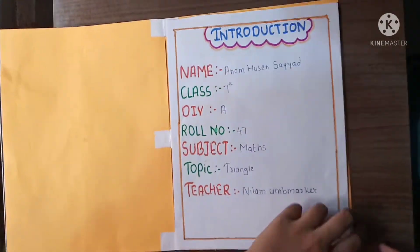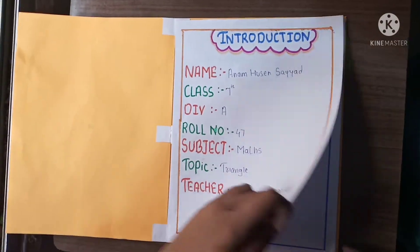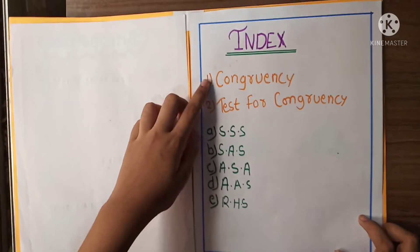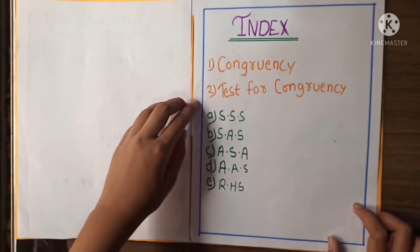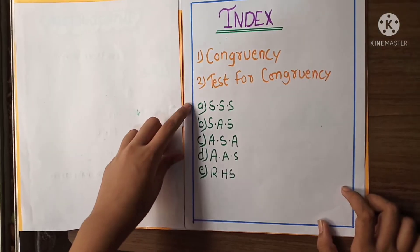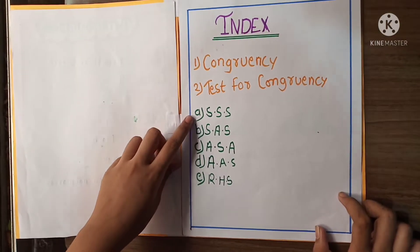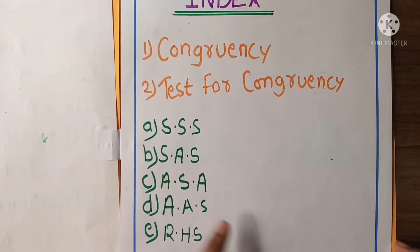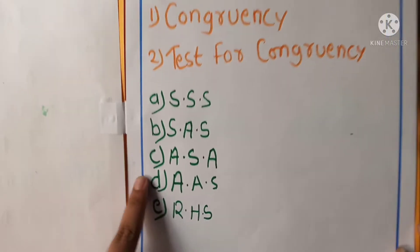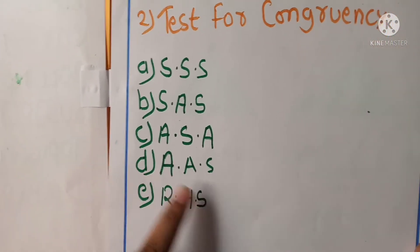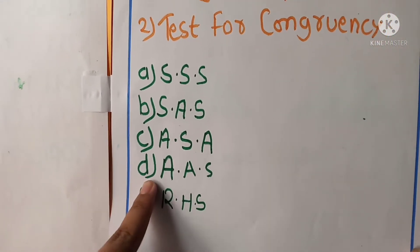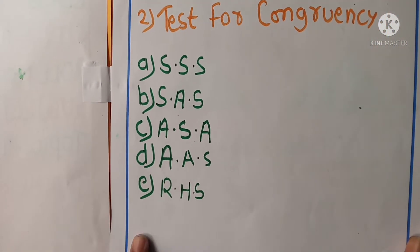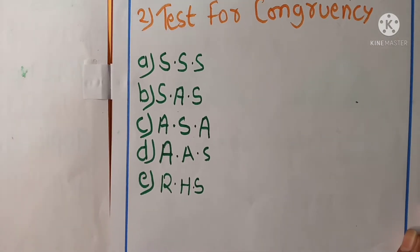Here is the index. Tests for congruency: A is Side-Side-Side, B is Side-Angle-Side, C is Angle-Side-Angle, D is Angle-Angle-Side, and E is Right Hypotenuse Side.